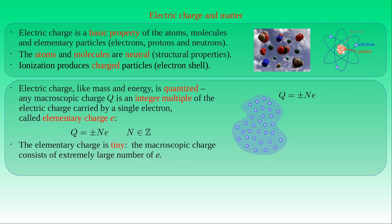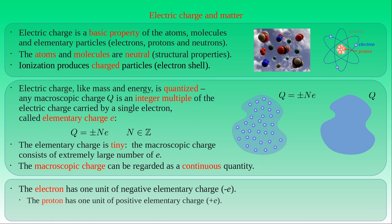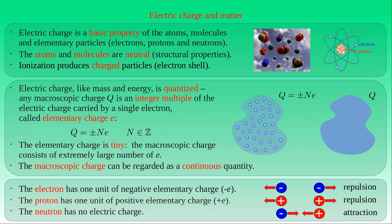The electron has a negative elementary charge, denoted by minus e. The proton has a positive elementary charge, denoted by plus e, and the neutron has no electric charge — that is, the neutron is electrically neutral. Therefore, electrons and protons carry opposite charges with the same magnitude. We also call charged particles charge carriers. Electrons repel each other with their like charges, as do protons. However, electrons and protons attract each other with their opposite charges.